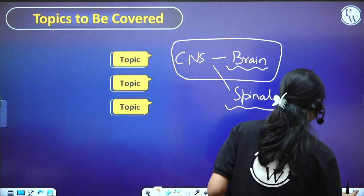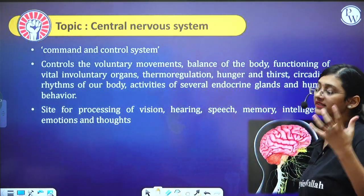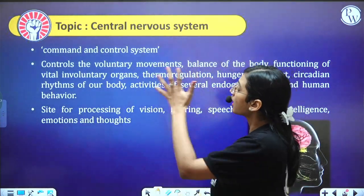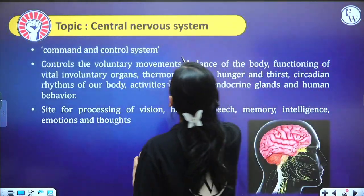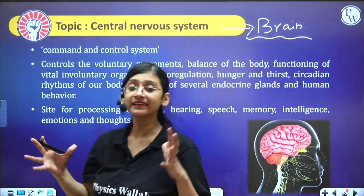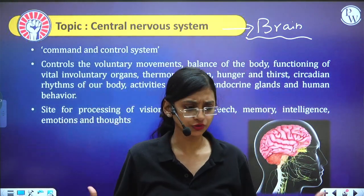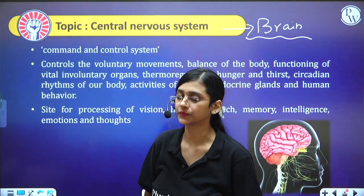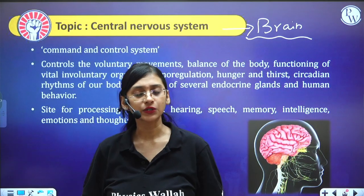Let us study about the brain. The brain is the most important part of the Central Nervous System. The brain is called the command and control system of the body — any command to control any part of the body goes through the brain.